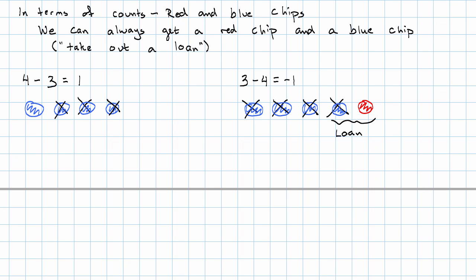Let's see an example now with opposite signs. Let's say I want to take 4 minus negative 3 or negative 3 minus 4. Four minus negative three means I have four blue chips. Someone comes along and says, I'm going to get rid of three dollars of your debt.